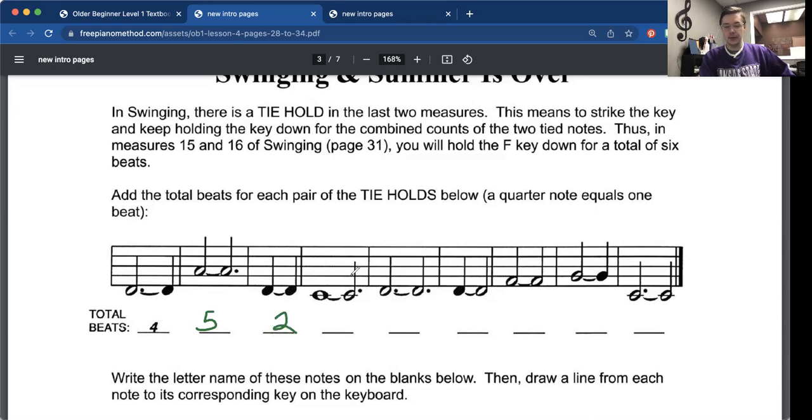Next whole note plus dotted half note. So four beats plus three beats, we'd have seven right there. Dotted half note plus dotted half note. Three plus three would be six. There's my weird looking six there.